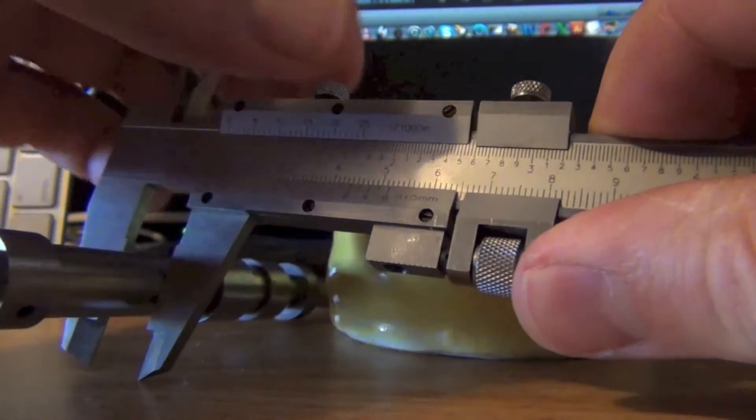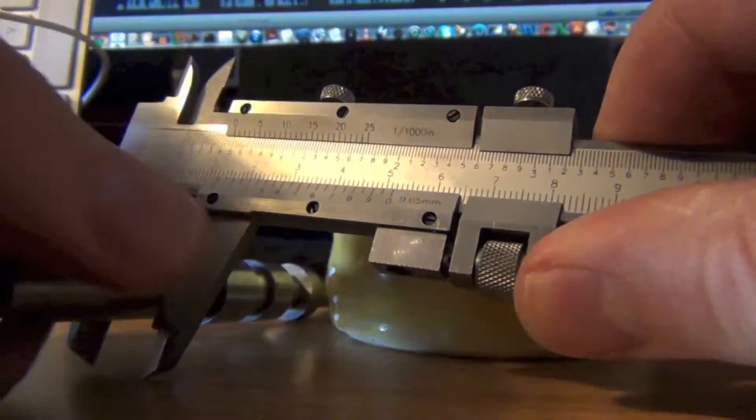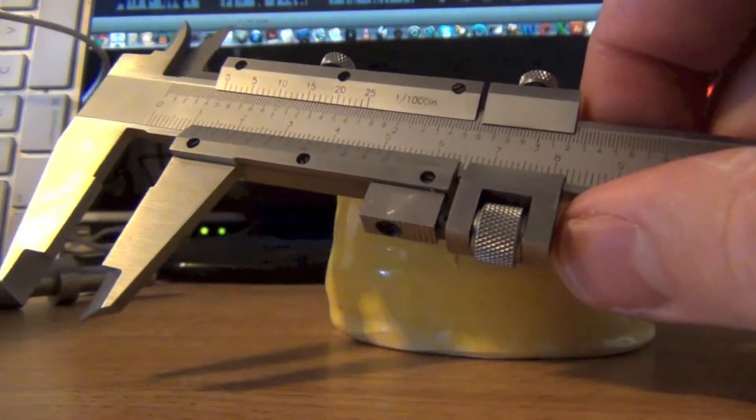To take a reading, let's find the center axial portion, tighten the thumb screw, carefully remove the object, and now we'll take a reading.